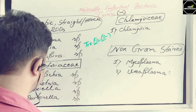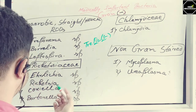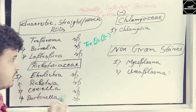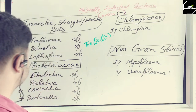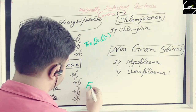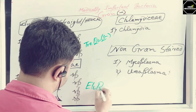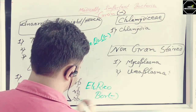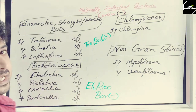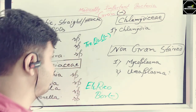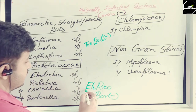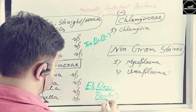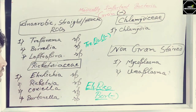Next is the Rickettsia group with Ehrlichia, Rickettsia, Coxiella, and Bartonella — very critical and difficult names to remember. The word I give you is 'Ericobar Negative.' Suppose it is the name of a bar — you can remember it that way. E for Ehrlichia, Ri for Rickettsia, Co for Coxiella, and Bar for Bartonella. So Ericobar Negative covers the Rickettsia group.